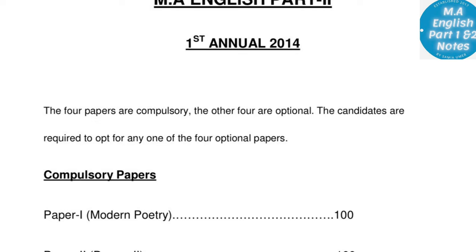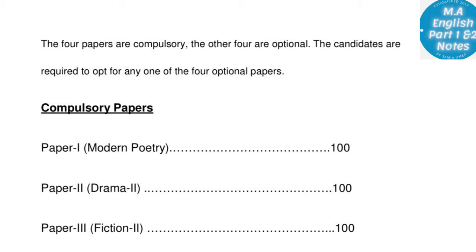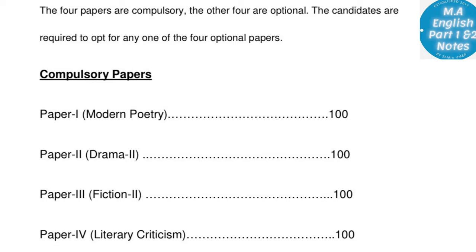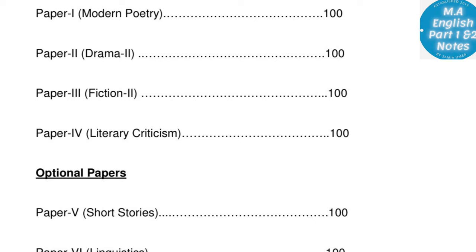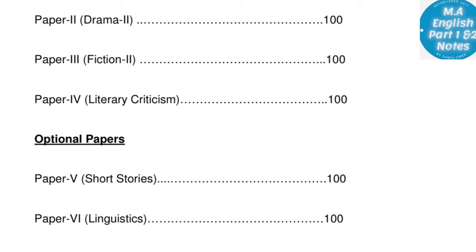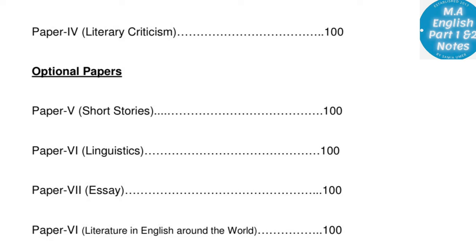Moving to MA English Part Two: four papers are compulsory and four are optional. Candidates must choose any one of the four optional papers. Compulsory papers: Paper One Modern Poetry — 100 marks; Paper Two Drama — 100 marks; Paper Three Fiction — 100 marks; Paper Four Literary Criticism — 100 marks. Optional papers: Paper Five Short Stories — 100 marks; Paper Six Linguistics — 100 marks; Paper Seven Essay — 100 marks; Paper Eight Literature Around the World — 100 marks. Total: 500 marks.